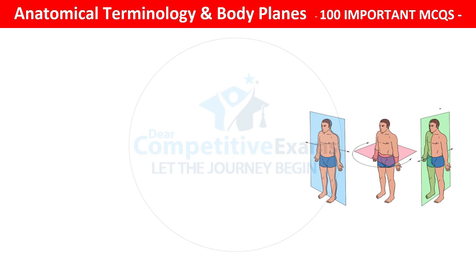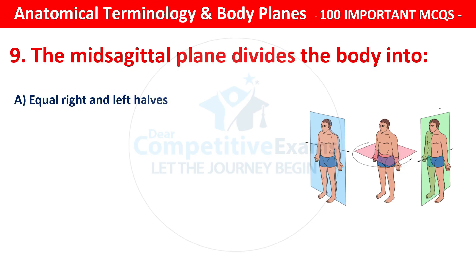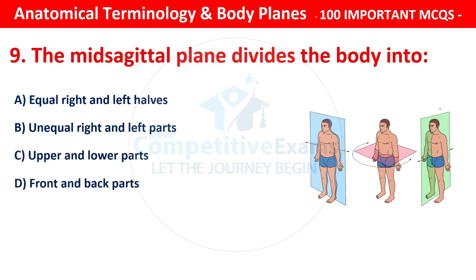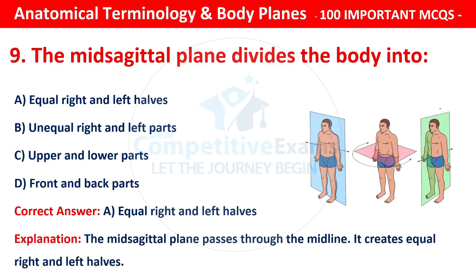Question number 9: The mid-sagittal plane divides the body into — options are: equal right and left halves, unequal right and left parts, upper and lower parts, or front and back parts. The correct answer is A — equal right and left halves. The mid-sagittal plane passes through the midline and creates equal right and left halves.